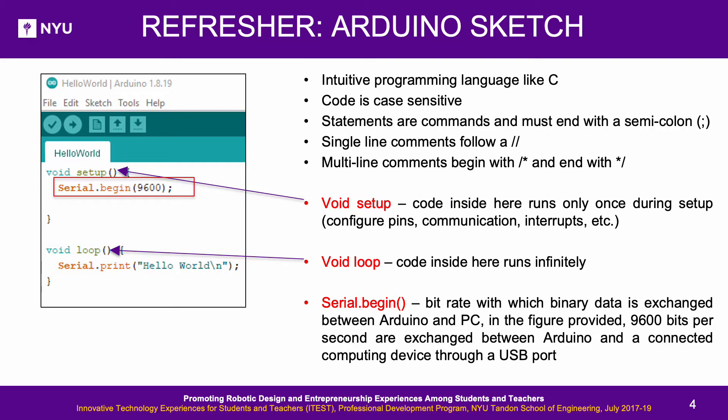Refresher — Arduino Sketch: Sketches usually consist of two main functions: void setup and void loop. The commands within the setup function run once during the start of the program, and the commands in the loop function run indefinitely. To use the Serial Monitor, use the Serial.begin function to initialize and choose the appropriate baud rate for communication, and use the Serial.print function to write on the Serial Monitor.